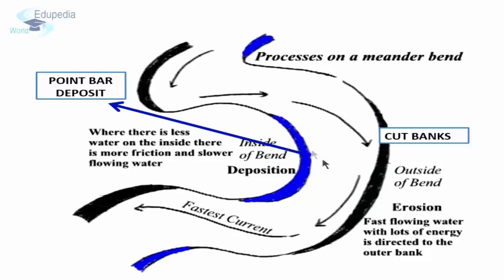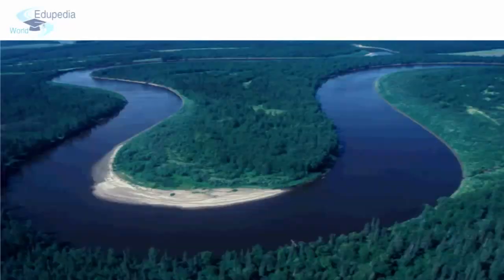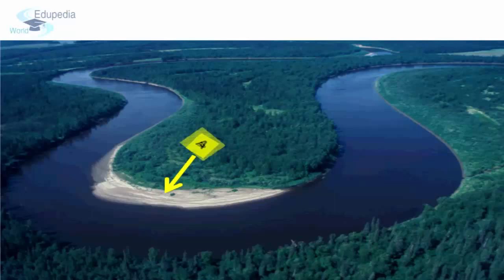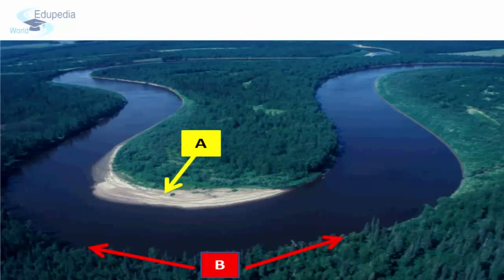The sediments deposited on the inner bank are called point bar deposits, whereas erosion of the outer bank is known as cut banks. If you look at this picture, you can see the inner side of the loop has a lot of deposition, which can be clearly seen, whereas the outer side appears to be eroded, suggesting that the water is much deeper at the outer bank. Due to meandering, the river is deeper on the outer bank and shallower on the inner bank.